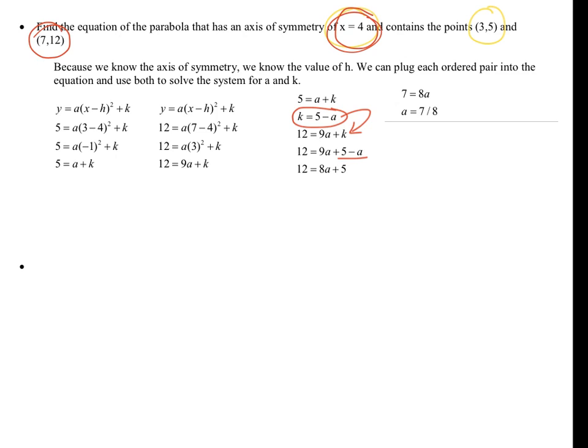So now that we know a, we still need k. But like we said a second ago, we know k is 5 minus a. So we're just going to do 5 minus 7 eighths and get 33 over 8. So here's our final solution. We're going to rewrite the equation with x and y back as variables. a is 7 eighths, h is 4, and now we know k is 33 over 8. So we've written the equation of the parabola that has that axis of symmetry and contains both of those two points.